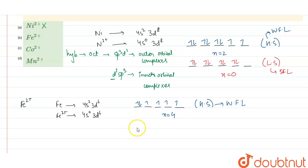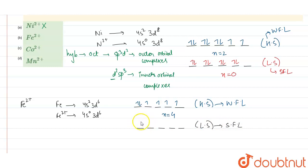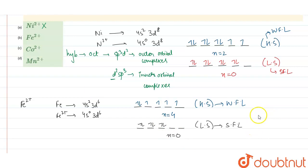For the low spin complex, formed by strong field ligands, we have 6 electrons: 1, 2, 3, 4, 5, 6. The unpaired electrons are 0. The difference is 4 minus 0 equals 4, so Fe 2 plus is also the incorrect option.